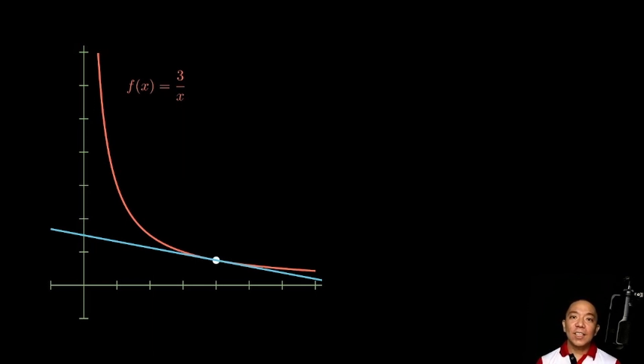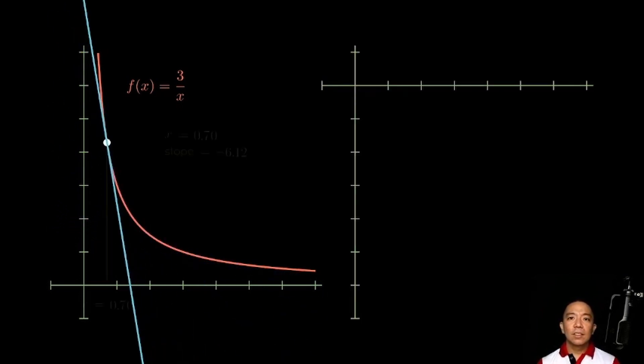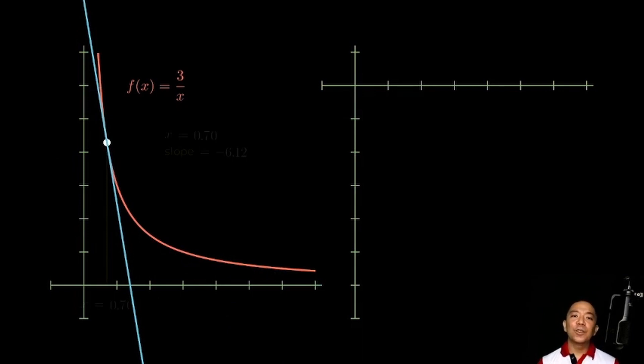Now, titignan natin kung ano itsura pag gina-rought natin yung slopes ng tangent line dun sa curve nating f of x. So, we drew a Cartesian plane sa right side tas nereset ko yung point P natin to the left. We'll start with x equals 0.7. The program has computed the slope of the tangent line when x equals 0.7 to be negative 6.12 approximately. Let's plot that point on the right side.